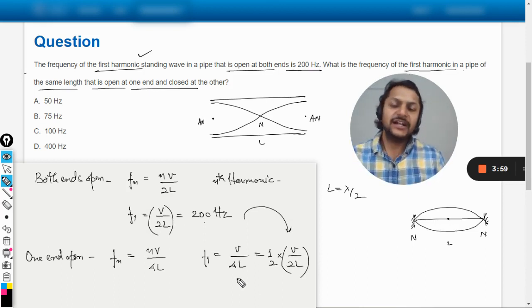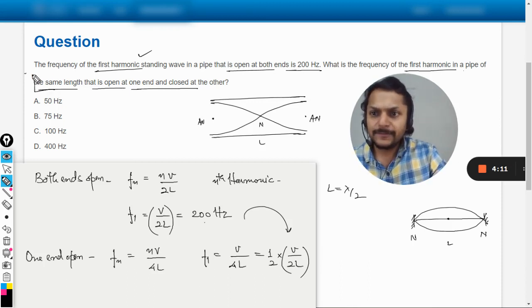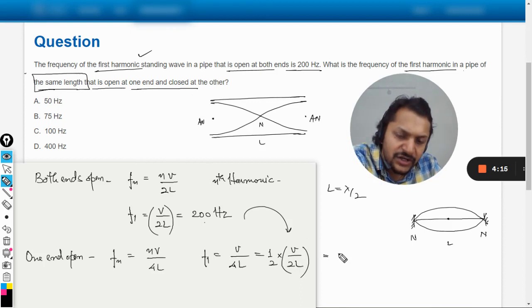Why? Because the speed of the wave is not going to change. It is a function of the medium and the medium is not changing in both of the cases—it's air, so the velocity of the sound is not going to change. And the length of the pipe is the same; it is given that the pipes have the same length.